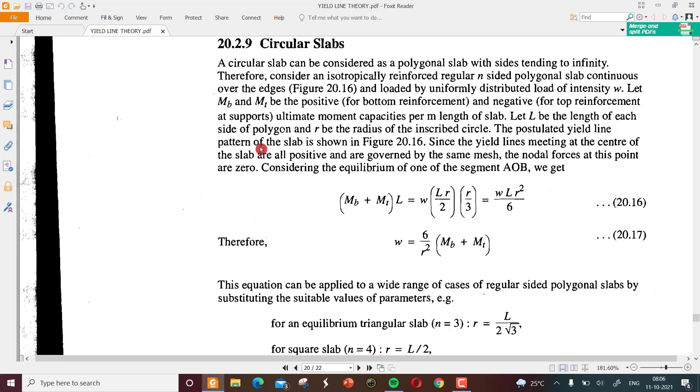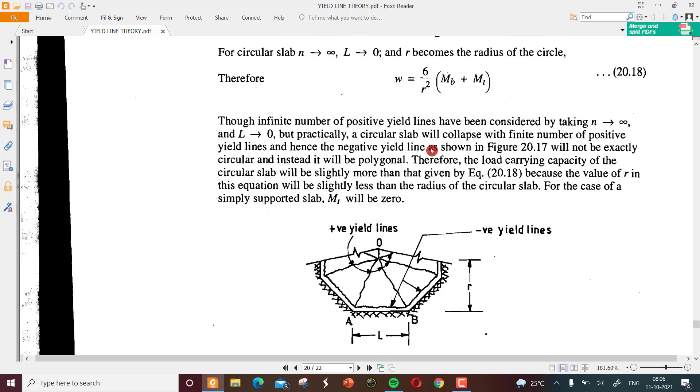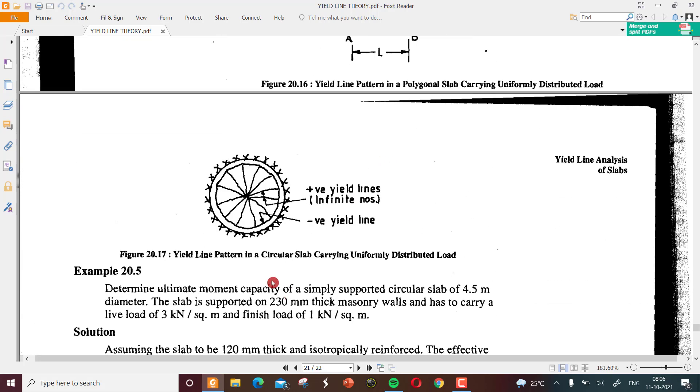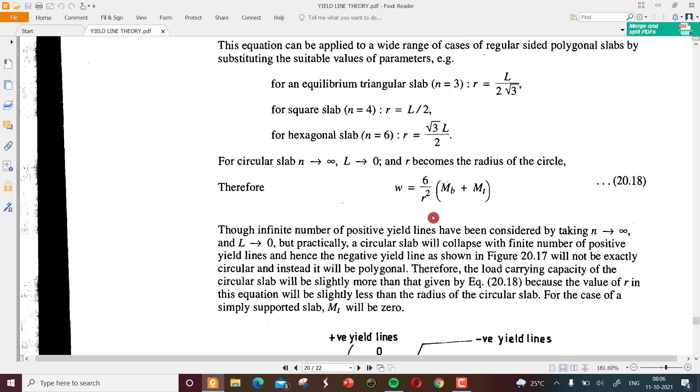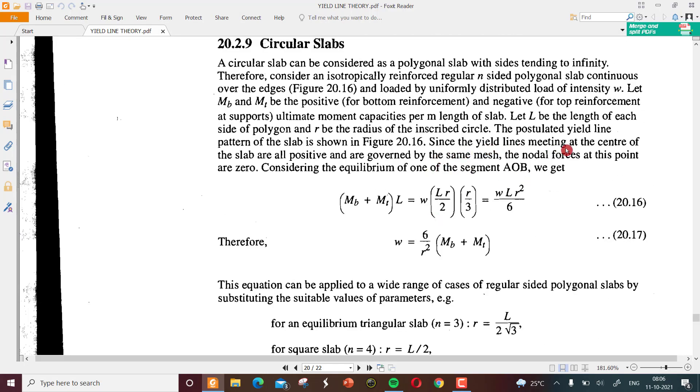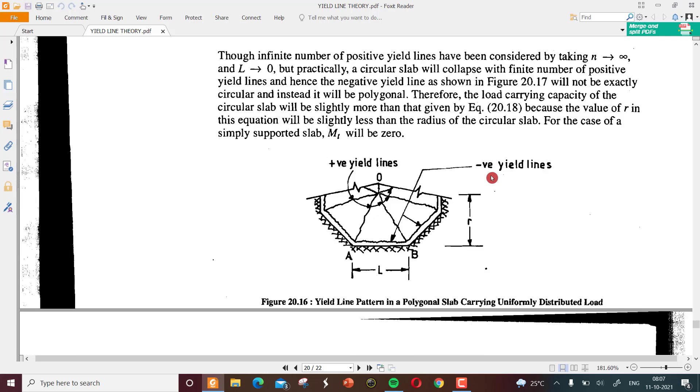The postulated yield line pattern of the slab is shown in Figure 20.16. For circular slabs, it is always like this. The designer chooses how to divide the segments or to what number of segments the circular slab has to be divided. Since the yield lines meeting at the center of the slab are all positive and governed by same mesh, the nodal forces at this point should be zero as per the principles given. Considering the equilibrium of one segment AOB, we will get this segment AOB.